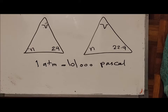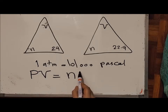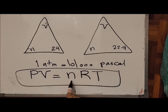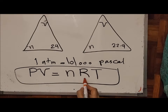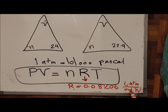Another equation you will use is the ideal gas law: PV = nRT, where P is pressure, V is volume, n is number of moles, T is temperature, and R is the universal gas constant. R equals 0.08206 L·atm / (mol·K). If pressure, volume, moles, or temperature are given, you can use this formula to work out the unknowns.